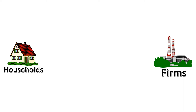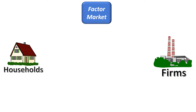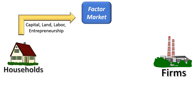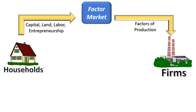To produce anything, businesses need resources, and so that's where we have the first half of our circular flow model, which is called the factor market. We call it the factor market because it's where households sell their factors of production — capital, land, labor, and entrepreneurship — to business firms. The business firms view those things as their factors of production; in other words, they need workers, machines, natural resources, and business leadership if they're going to produce anything.